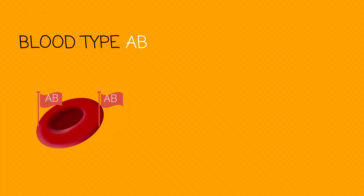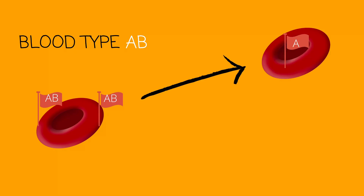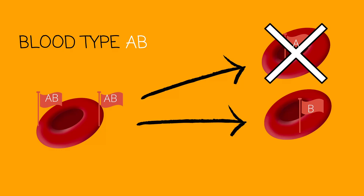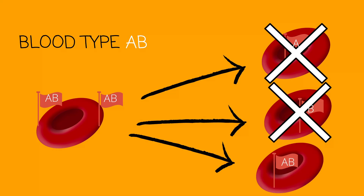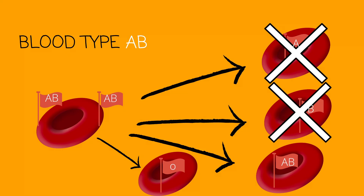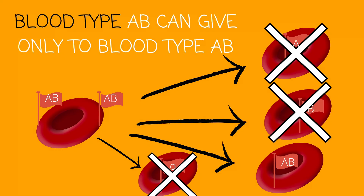Now working with blood type AB. AB will be able to give to any blood type representing AB — and that's AB together, not A or B separately. So will it be able to give to A? No. Will it be able to give to AB? Yes. Will it be able to give to O? No. Blood type AB can only give to blood type AB.